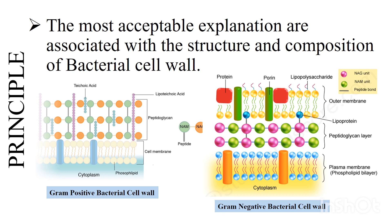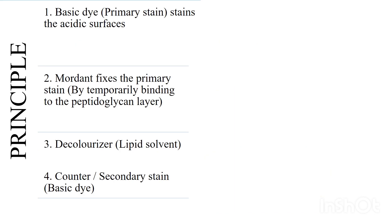The principle behind Gram staining is most acceptably associated with the structure and composition of the bacterial cell wall. In the Gram-positive cell wall, there is teichoic acid and a thick peptidoglycan layer. Peptidoglycan is N-acetylmuramic acid and N-acetylglucosamine bound by a peptide bond.